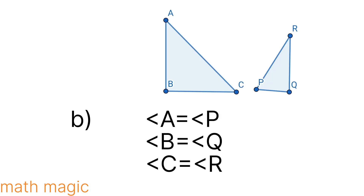So QR equals 8 cm. For the second part, triangle ABC and triangle PQR: BC is 8 cm and QR is 8 cm. Angle B equals angle Q, angle C equals angle R.